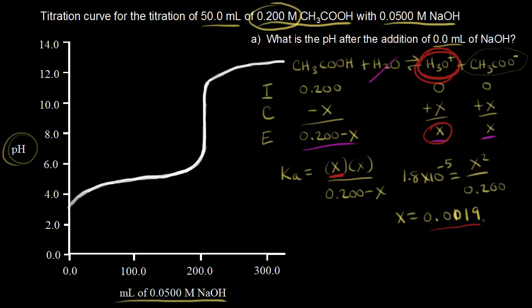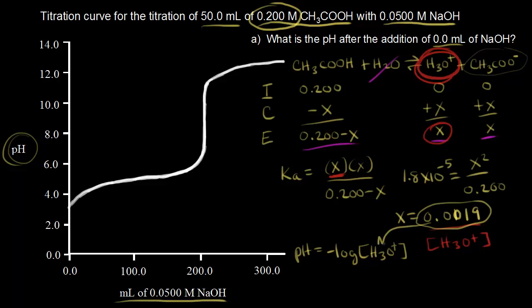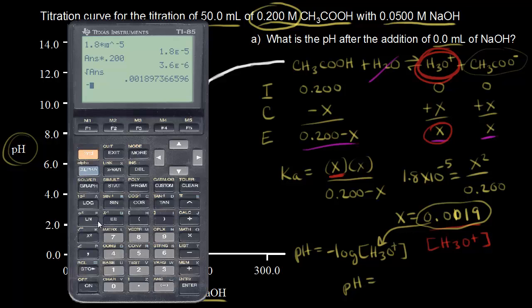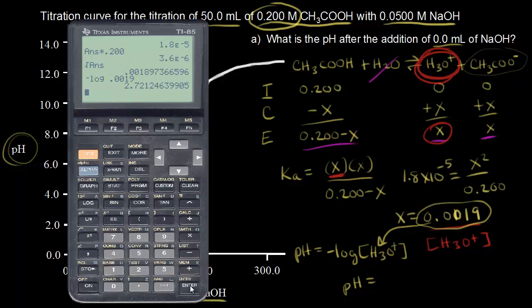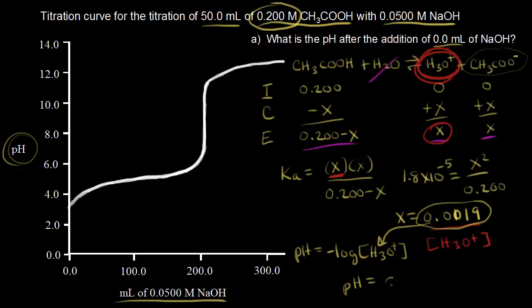Since X equals the concentration of hydronium ions, we find pH using pH = −log[H₃O⁺]. Taking the negative log of 0.0019 gives pH = 2.72. So before any base has been added, at 0.0 mLs of sodium hydroxide, the pH is 2.72.